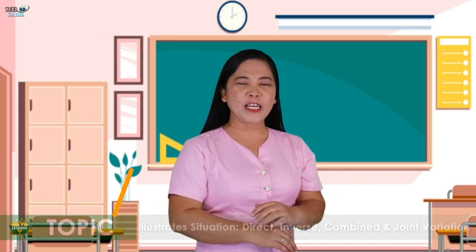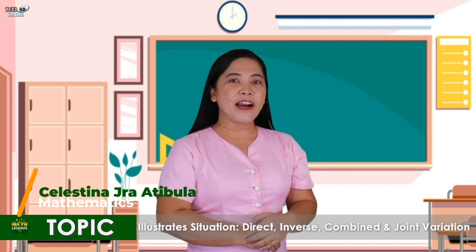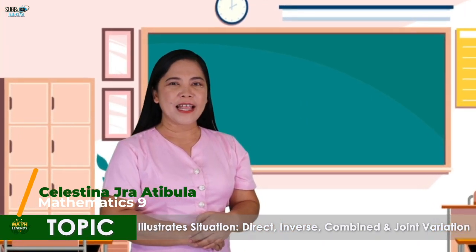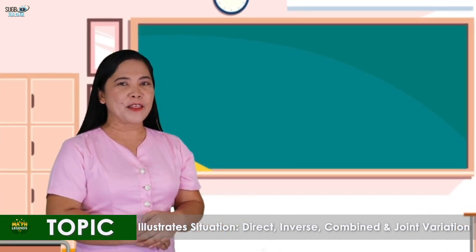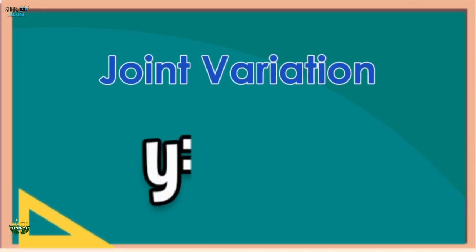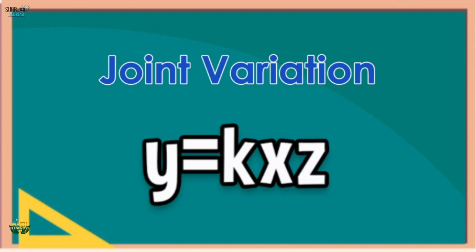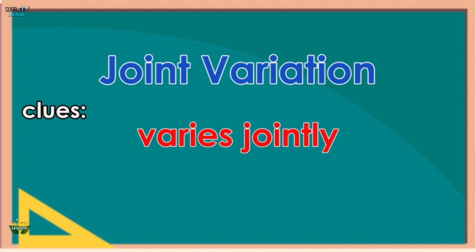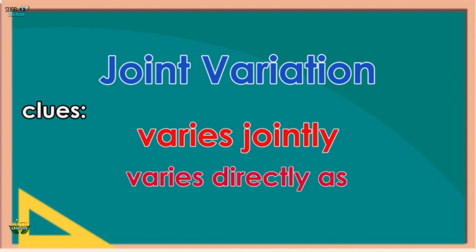So far, you have seen variations involving only two quantities. However, there are times when problems involve more quantities. This is why we have the remaining types. The third type is joint variation. A joint variation occurs when a quantity varies directly as the product of two or more quantities. It can be written as y = kxz, where y varies directly as the product of x and z, and k is the constant of variation. Clue words include 'varies jointly' and 'varies directly as.'